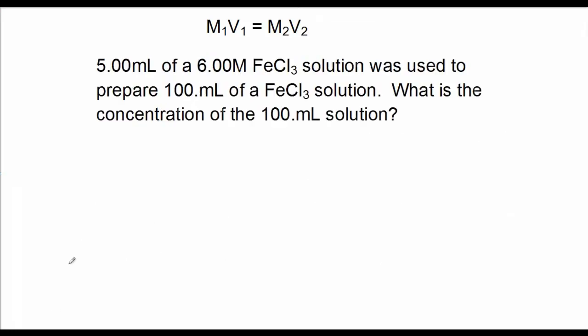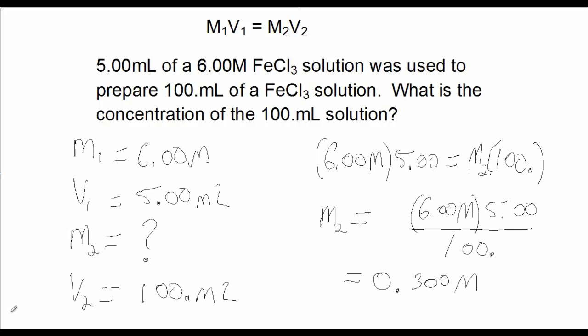Here's another problem for you. 5 mL of a 6 molar iron(III) chloride solution was used to prepare 100 mL of an iron(III) chloride solution. What is the concentration of the 100 mL solution? In this problem: M1 is 6 molar, V1 is 5 mL, M2 is the unknown, and V2 is 100 mL. Solving for M2, the dilute concentration is 0.3 molar.